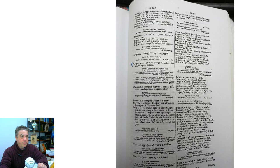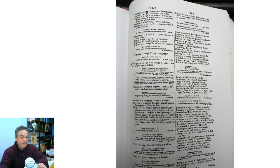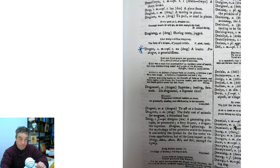If you look at the old Welsh dictionary here — this one's from the early 19th century — there's the full page, just zooming in a little bit. 'Dragon' is listed as a leader, and then the top leader is the Pen Dragon — the generalissimo, the guy in overall charge. As you can read there, there are other words as well that tie in with 'dragon.'